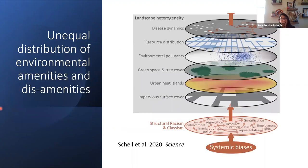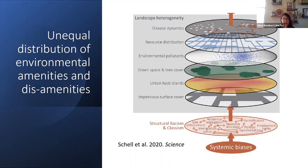These HOLC grades and covenants and their impacts on investment and disinvestment have had significant legacy effects that persist today as environmental injustice and distributional justice issues. Evidence from over 37 cities indicates that neighborhoods graded C or D have more environmental dis-amenities such as pollution and urban heat islands, and fewer environmental amenities like parks and tree cover.